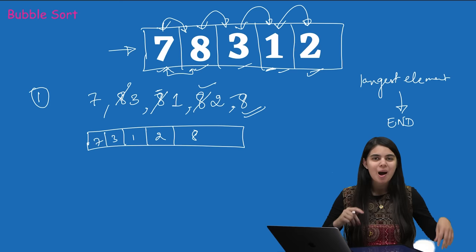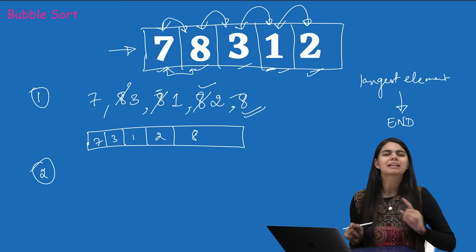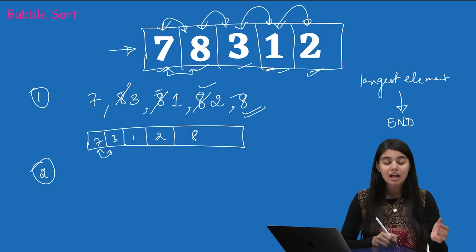Now we start the second loop. We can ignore the last element because we already know the largest element is placed at the end. We start the comparison again with the remaining elements.